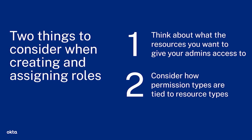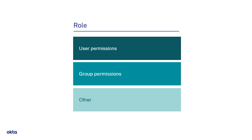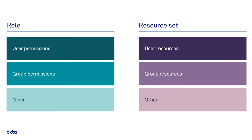The second thing to consider is how permission types are tied to resource types. For example, for each custom admin role, there are different permission types that affect users, groups, and other resources that will continue to add in the future. When constructing a resource set, there are corresponding resources for each permission type. When you put the role and resource sets together, the user permissions will only affect the users identified by the user resources, and the group permissions will only affect the groups identified by the group resource. This means group permissions will not affect user resources regardless of the group assignment.